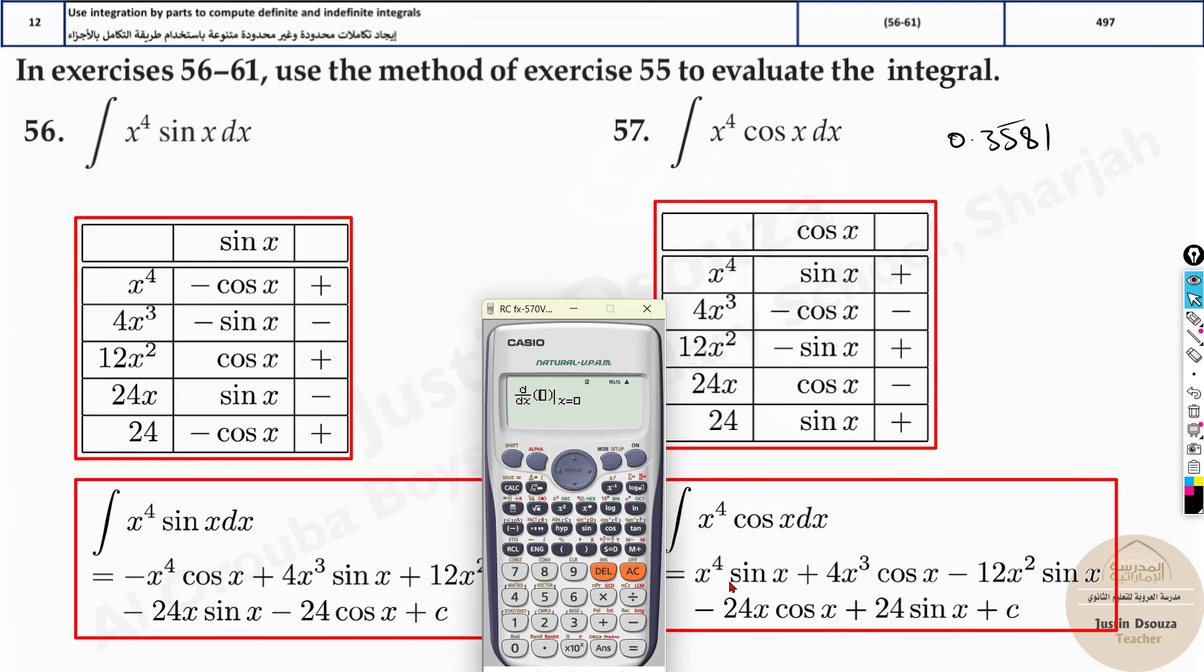Shift, dy by dx. Now, over here, you need to type everything. That's the only issue. But, it's just typing, nothing else. x power 4, sine x. Keep the variable x as it is. Now, 4 x cube. Don't substitute 1.3 over here. We substitute it at the end. x is as it is a variable x. Now, minus 12 x square. Sine x. Over here, sine x. Minus 24 x. That is alpha x. Cosine x. Plus 24, sine x. That's it. We don't put the c.